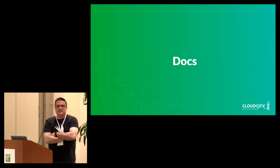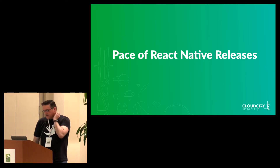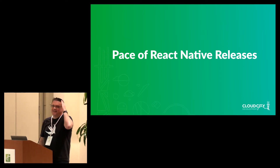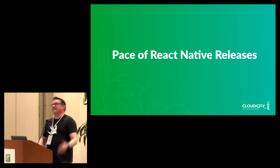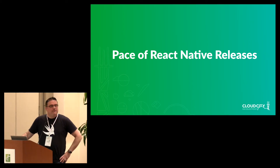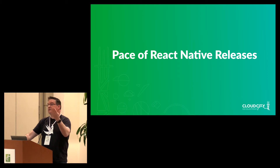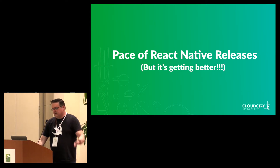Another downside is the documentation and the pace of React Native releases. It used to be relentless — every two weeks you'd get a new version that broke things. Imagine new versions of Swift every two weeks. Thankfully there are not as many breaking changes now, and they've slowed the pace — instead of every two weeks, it's every month. It is getting better.